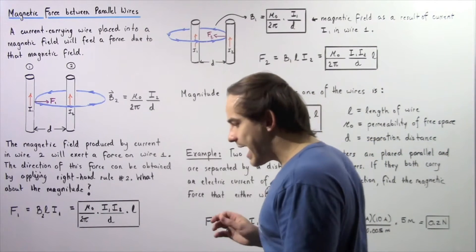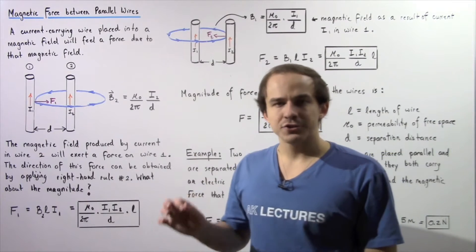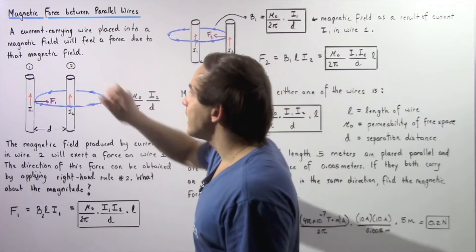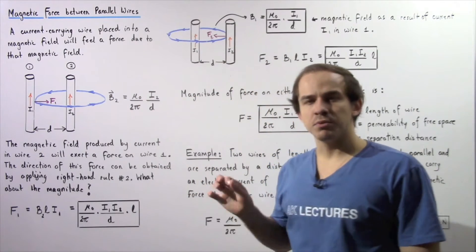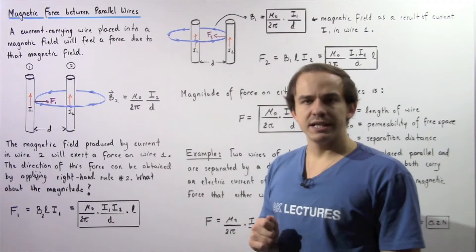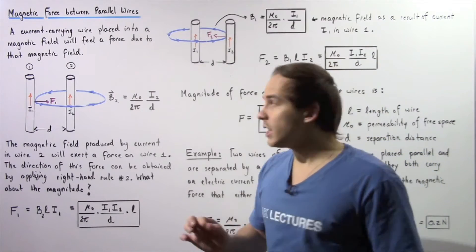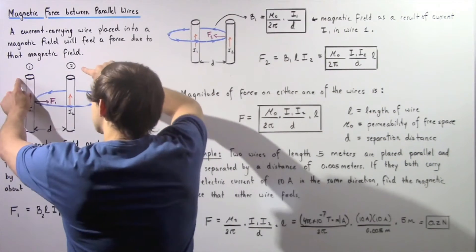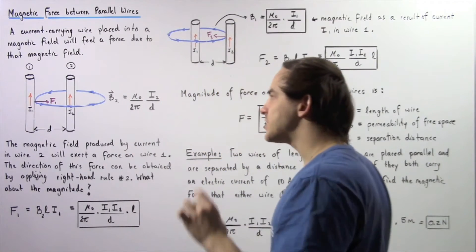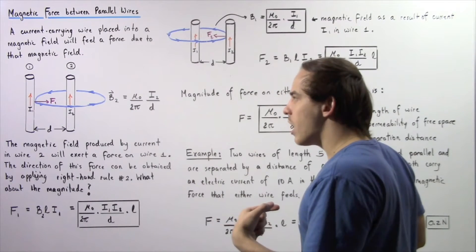Anytime we have an electric current moving inside a wire, that electric current will produce a magnetic field. Also recall that a current-carrying wire placed into an external magnetic field will feel a magnetic force. This implies that both wires will feel a magnetic force as a result of the magnetic field produced by the other wire.